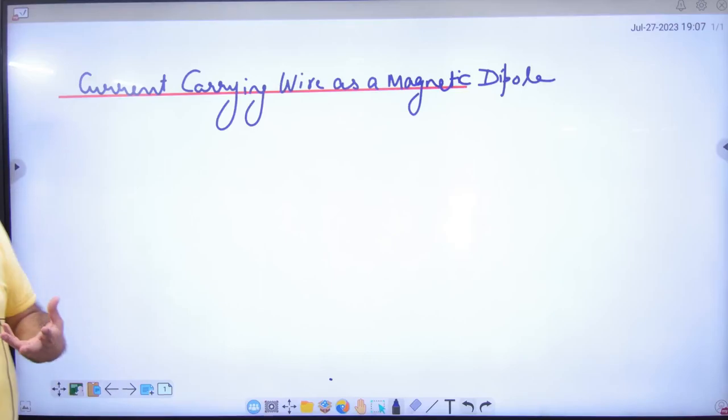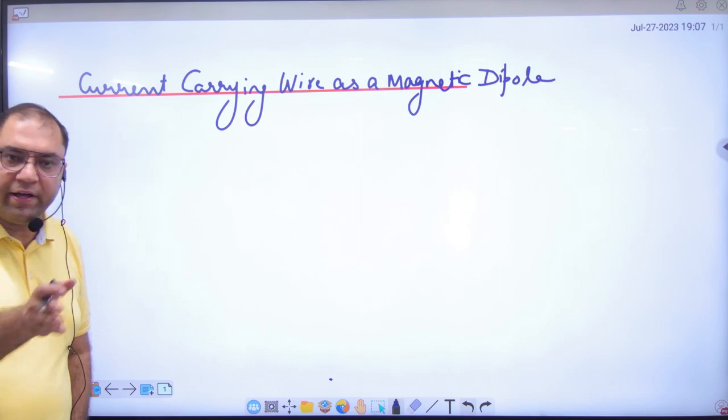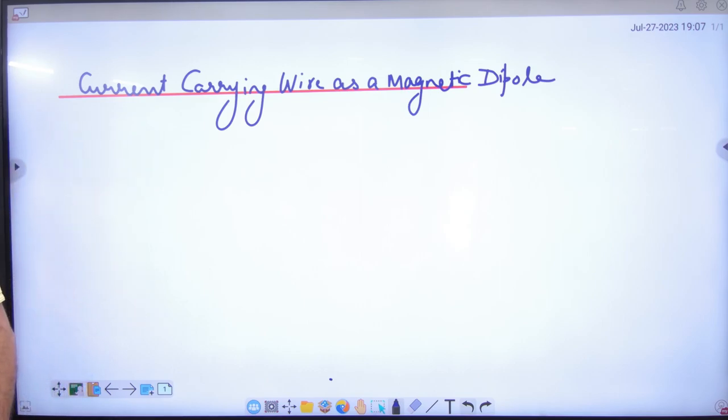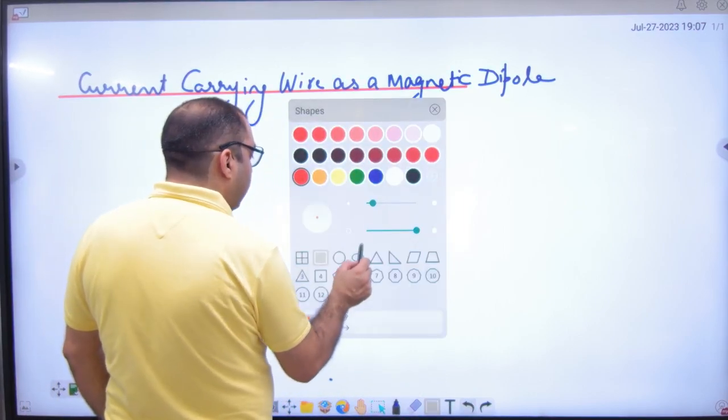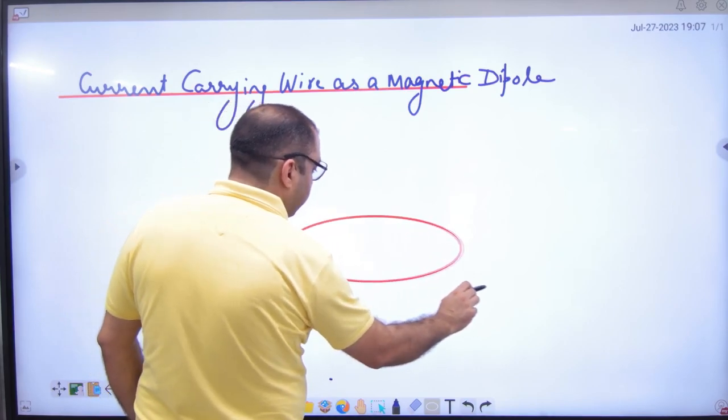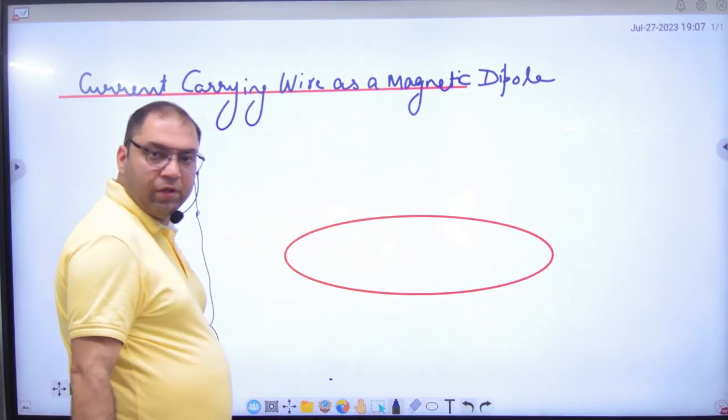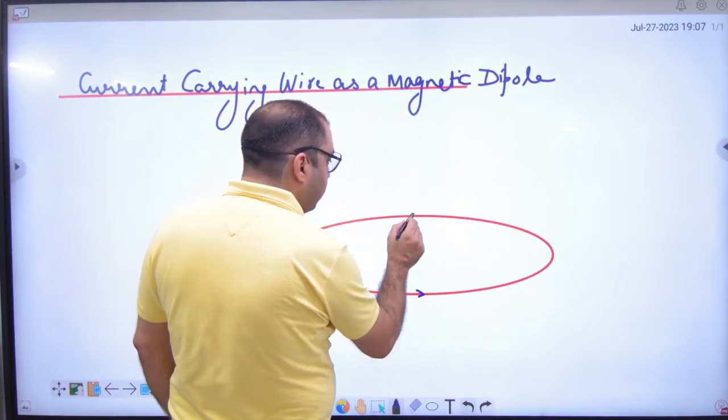Current carrying wire as a magnetic dipole. Suppose you have a current carrying wire and this current is going on.